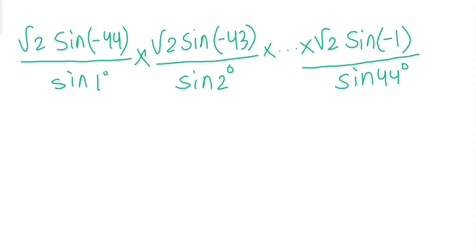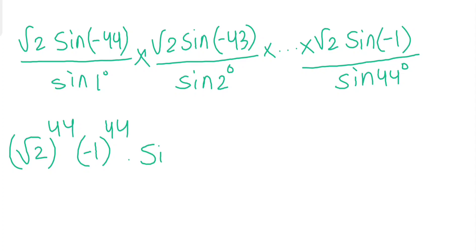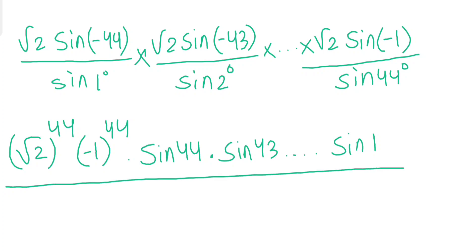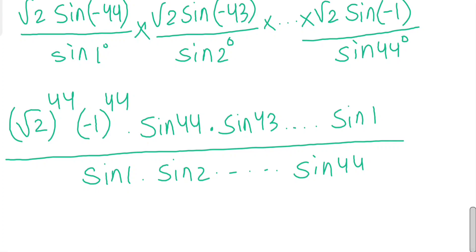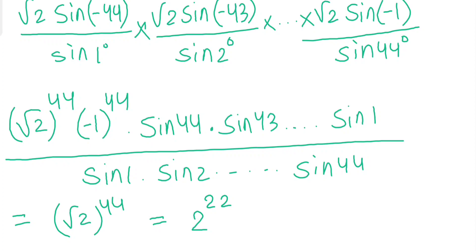There are 44 such terms, so we get (√2)^44 · (-1)^44 · [sin 44° · sin 43° ··· sin 1°] all divided by [sin 44° · sin 43° ··· sin 1°]. The sine terms cancel, (-1)^44 = 1, and (√2)^44 = 2^22. So our answer is 2^22. Thank you for watching, see you next time.